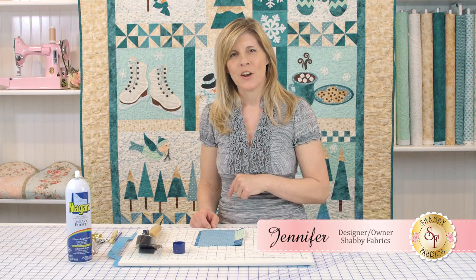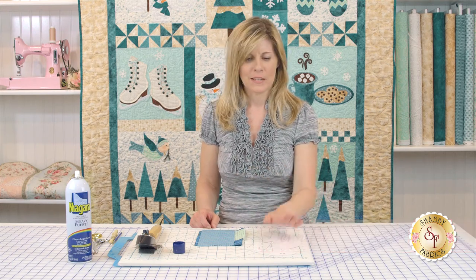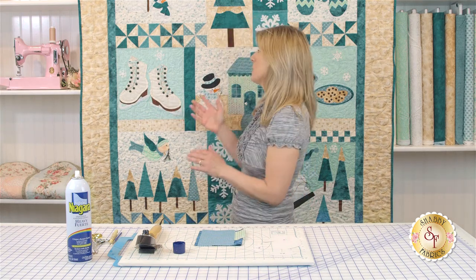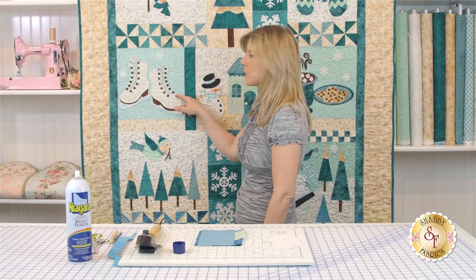Welcome to part four of the applique tutorial from Shabby Fabrics. Now that we've learned how to make the templates, we're going to get started on the fun process of actually putting the templates to fabric and getting that edge turned under. We're all after the same thing, and that's a nice crisp edge.